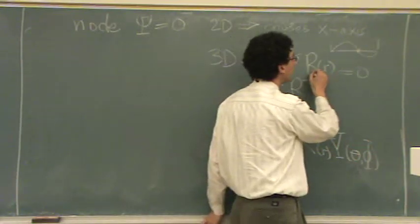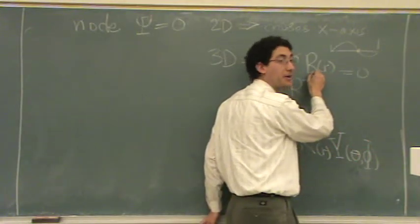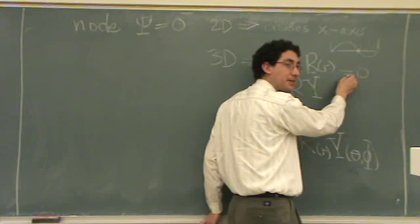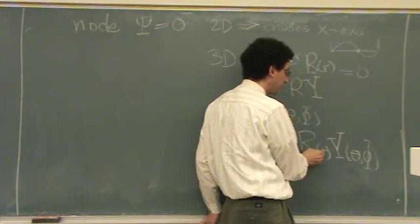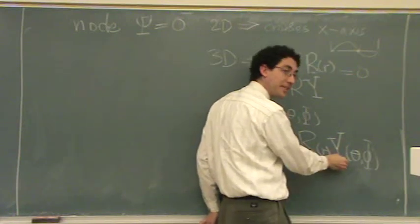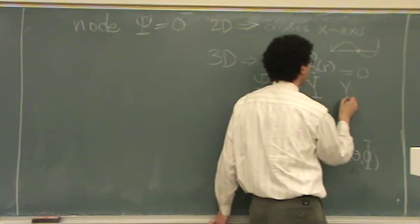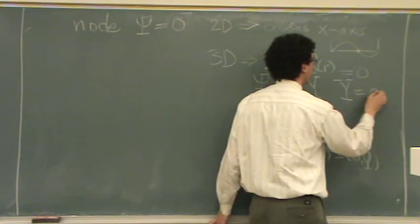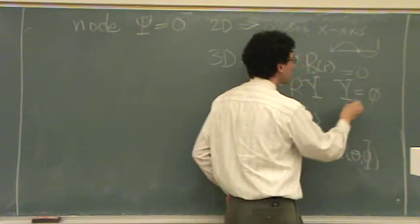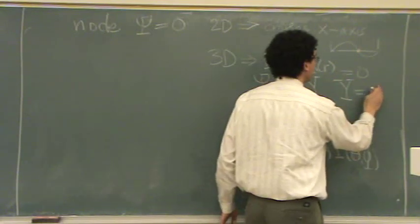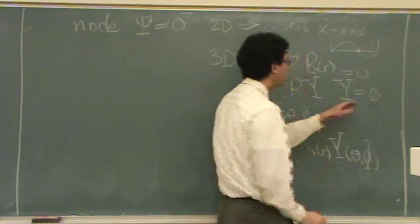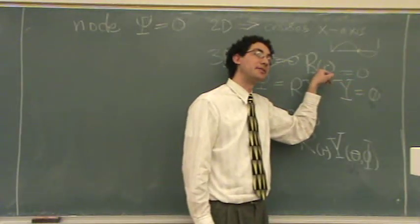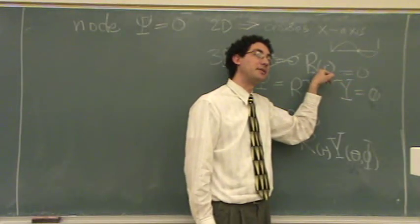You can find a node when capital R, the radial part of the wave function, equals zero, or when the angular part Y equals zero. Most often in problems you're going to use the radial part — that's the top one.